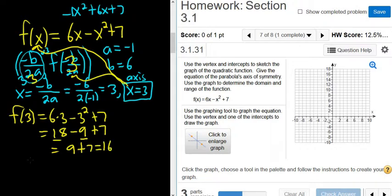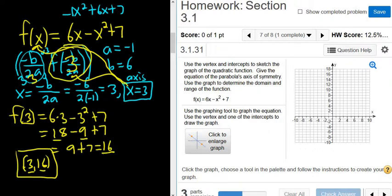So now we have our vertex. It's 3 comma 16, because we have f of 3 equals 16. So x is 3 and y is 16. You can also think about it. We just worked out this number here. This number is 16. That's the y coordinate and the x coordinate is here. It's the 3.